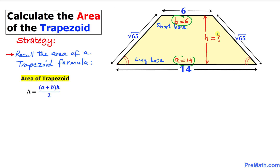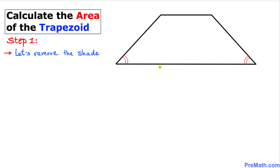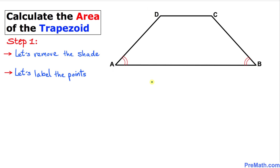We don't know the height H, so we are going to calculate it in the next few steps. Let's remove the shade from the figure to get our naked trapezoid, and label the vertices. I'm going to call them point A, vertex B, vertex C, and vertex D.